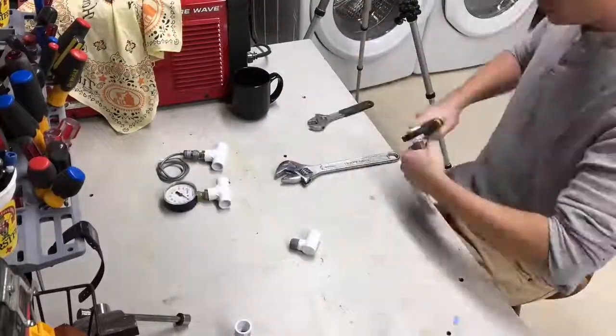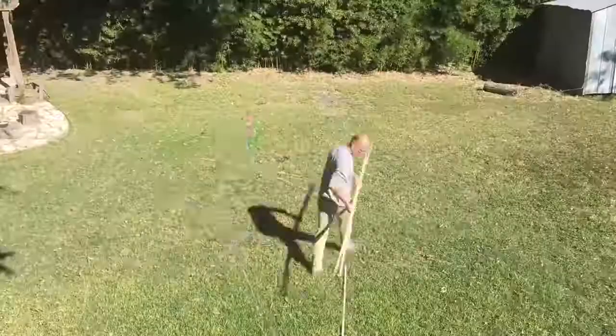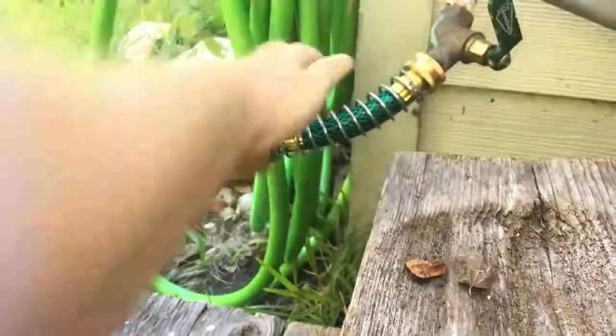So how do engineers design pipe systems to avoid this condition? Let's build a model pipeline and find out. Here's my setup. I've got about 100 feet or 30 meters of PVC pipe connected to the water on one end and a valve on the other.